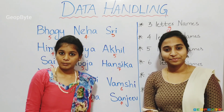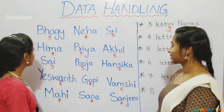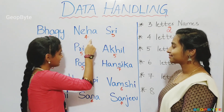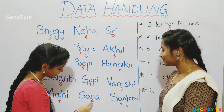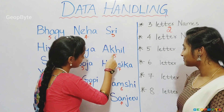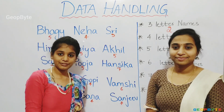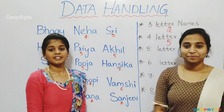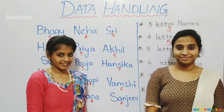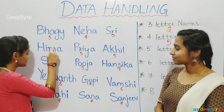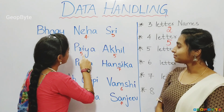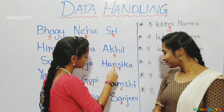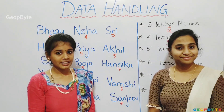How many four-letter names are there? One, two, three, four, five. There are five names of four letters. Now, let us see how many five-letter names are there. One, two, three, four. There are four names of five letters.